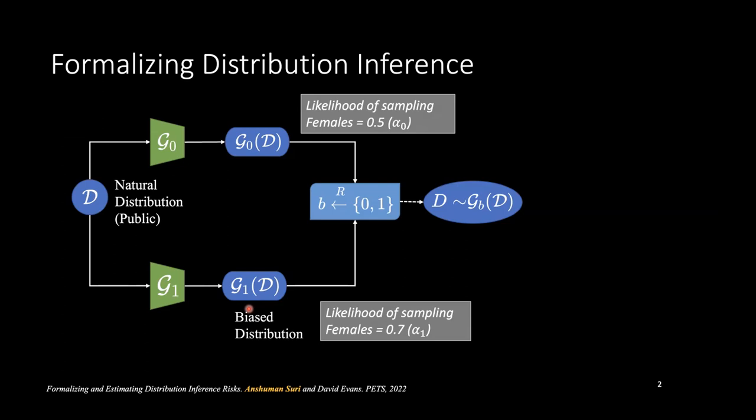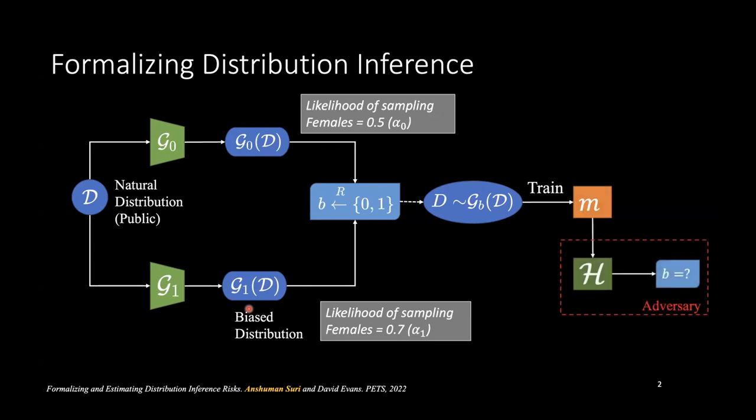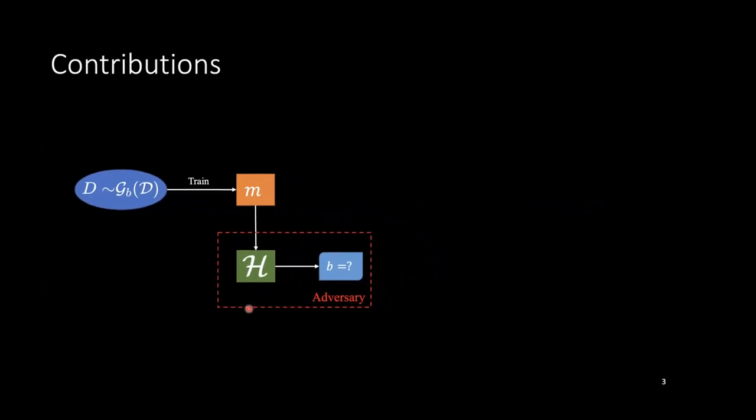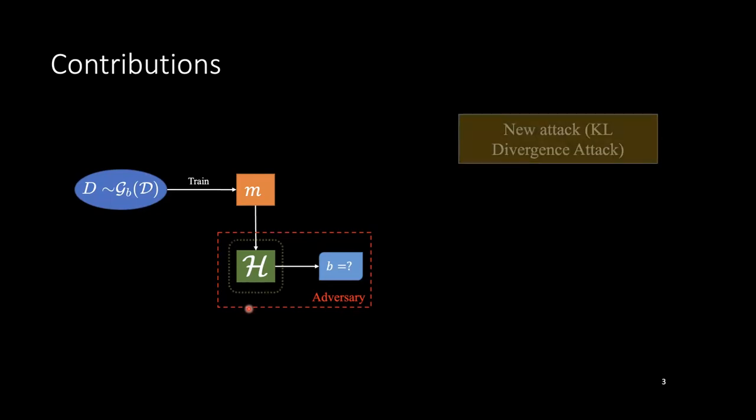The game is set up in a way where the victim will randomly sample one of these distributions, and based on a data set coming from that training distribution, train a model M on it. The adversary's goal is to look at this model and public information in the game and infer which of the two training distributions the data set actually came from. In this work, we try to look at different aspects of this whole game and see if we can make contributions to it.